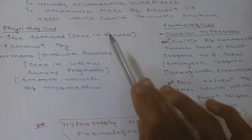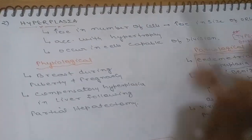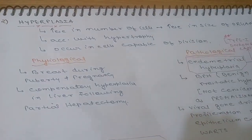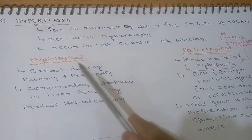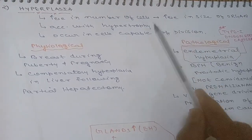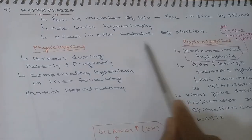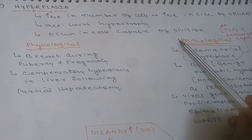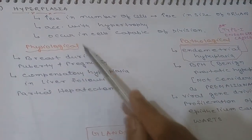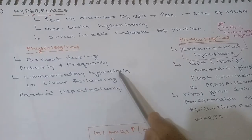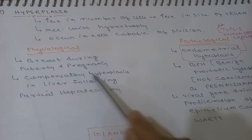Hyperplasia is increasing number of cells, which increases organ size. It generally accompanies hypertrophy. Hyperplasia occurs in cells capable of division, whereas hypertrophy occurs in cells that have lost ability to divide. There are two types: physiological and pathological. Physiological hyperplasia is seen in the breast during puberty and pregnancy, and also compensatory hyperplasia in the liver following partial hepatectomy.